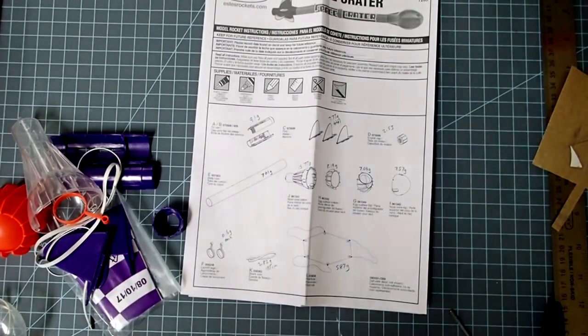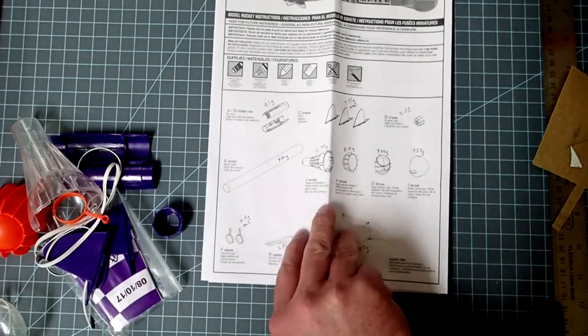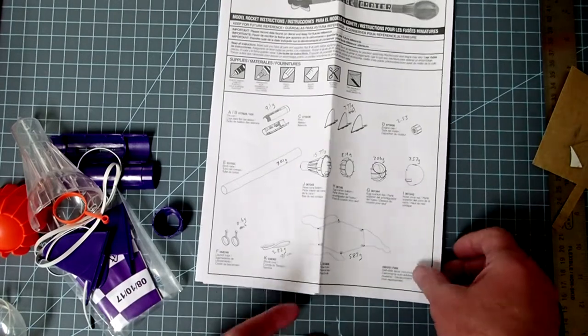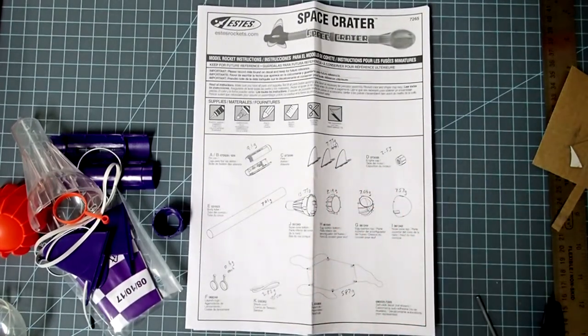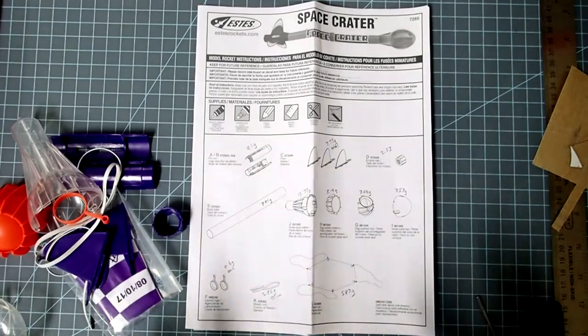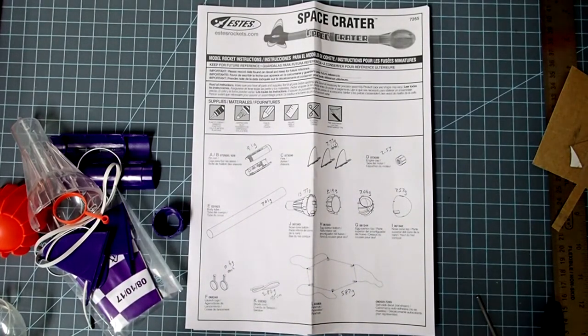Like any of these kits, you want to make sure that you've got all of the parts. And I've already gone through this, so I'm not going to go through piece by piece here. And the numbers you see here are the masses of each part. And I just wrote those down as I went along in order to put this into rocket simulation software later on.